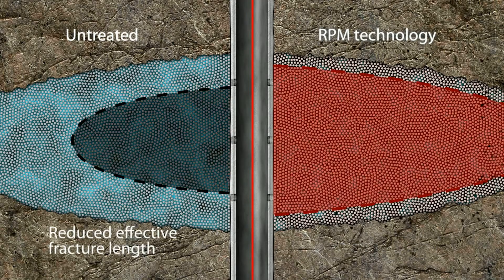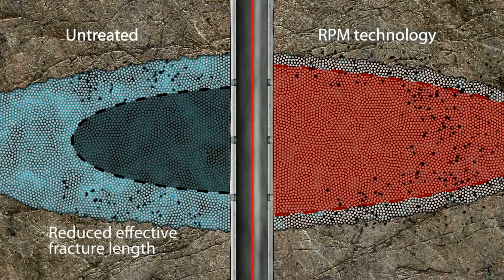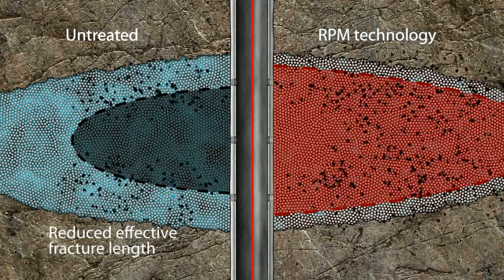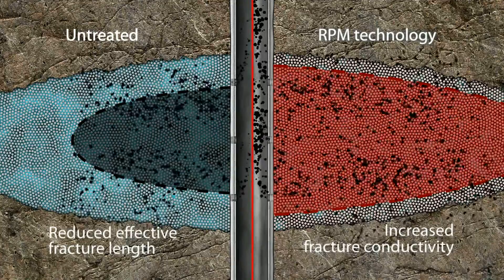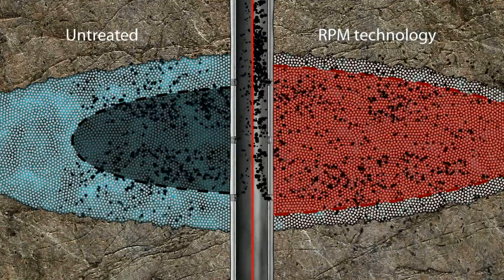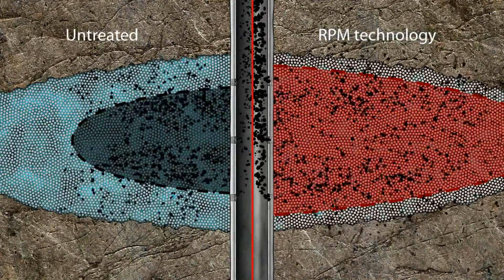The improved fracture cleanup and the reduced conductivity impairment due to gel damage leads to increased effective fracture length and conductivity after fracturing. This improves the permeability of the fracture to hydrocarbons.